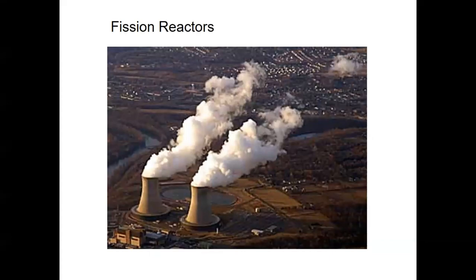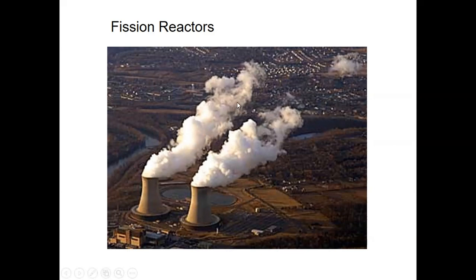Fission reactors around the world are producing electricity as a byproduct of the fission reaction. This is one example in which large cooling towers are seen emitting exhaust steam, and the small reactor buildings in this region are where the nuclear reactor is placed.